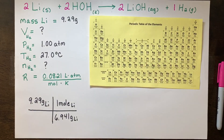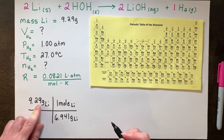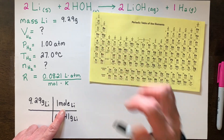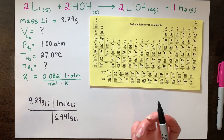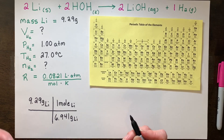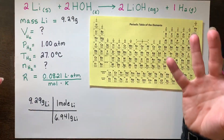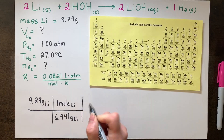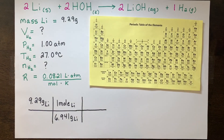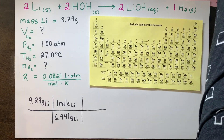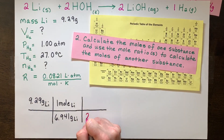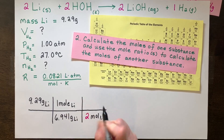Grab a periodic table, because it's time to do some molar mass calculations. If we have 9.29 grams of lithium, we're going to divide it by the molar mass of lithium, which is 6.941 grams of lithium for every one mole. I would have over a mole of lithium, because I have 9 divided by about 7. But I want to know how much hydrogen I can create from using all the lithium, having it completely react in excess water. So I'm going to continue with my stoichiometry conversion and use the mole ratio. For every 2 moles of lithium, I will create 1 mole of hydrogen gas.